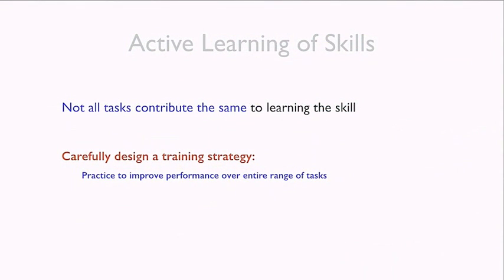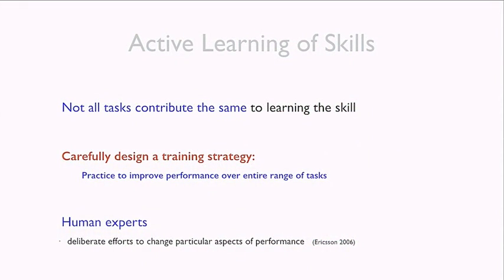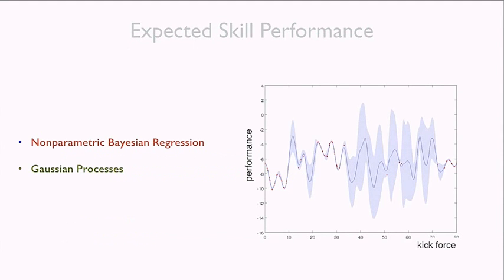Not all tasks that the robot can choose to practice give the same amount of information about how to solve other tasks. We want to carefully design a training strategy so the agent selects tasks that — when learned — provide a lot of information about how to generalize to lots of other problem variations. The goal is to become competent in a wide range of problems as fast as possible. There is psychological evidence that human experts do exactly this through deliberate practice.